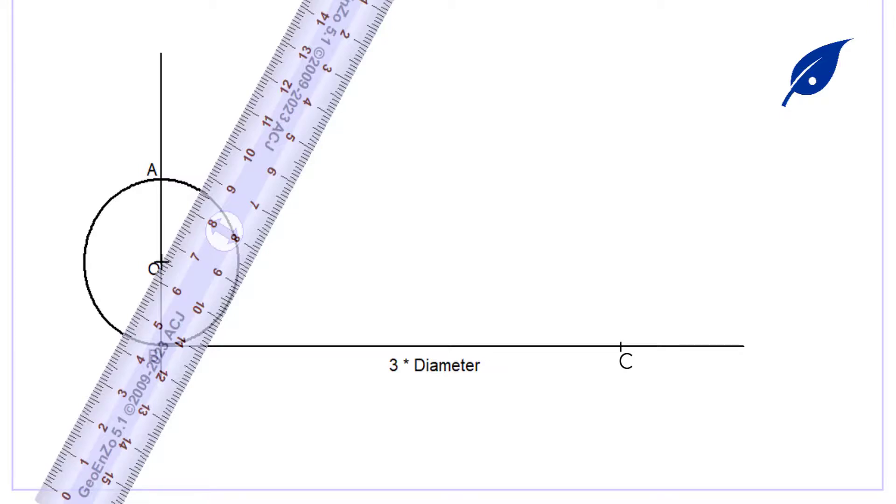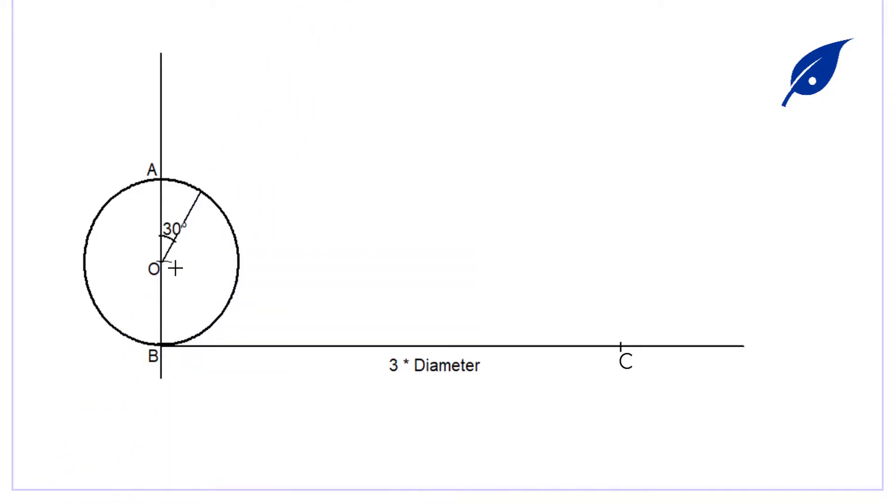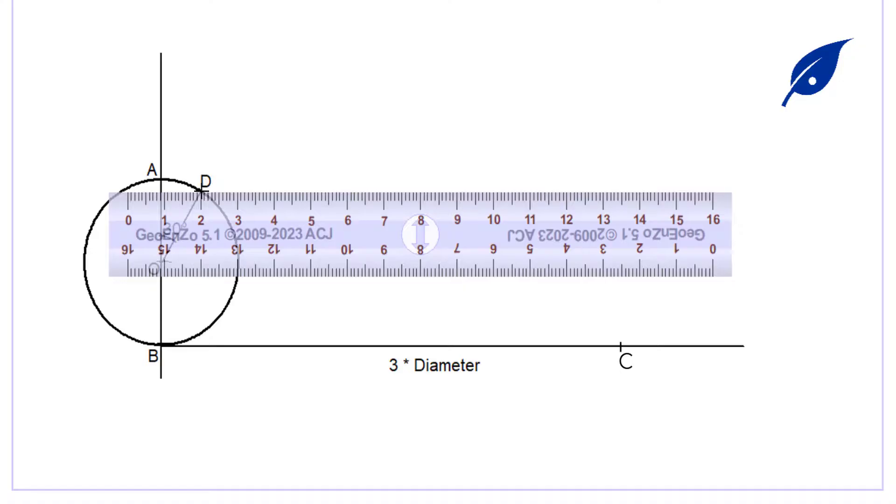After doing that, we'll move to point O at the angle of 30 degrees to the vertical to get another point which is D on the circumference of the circle. From point D we draw a horizontal line to meet the line AO to get point E.